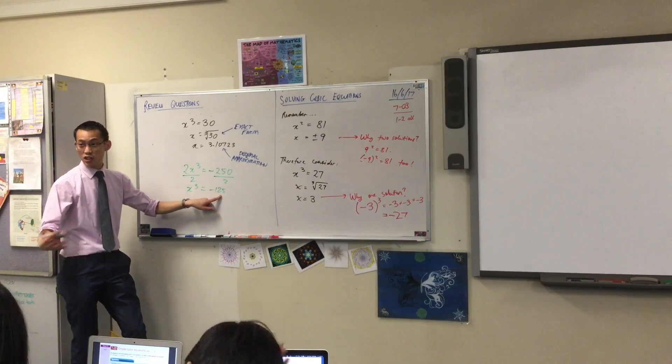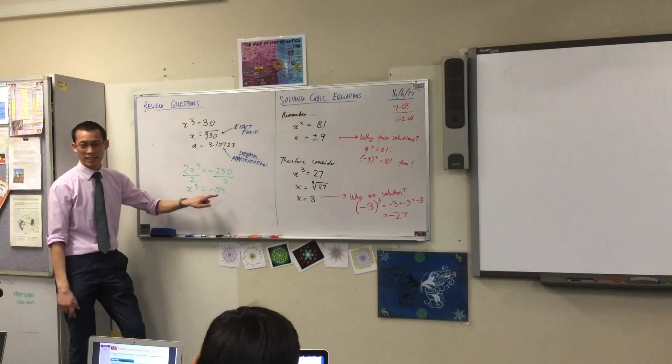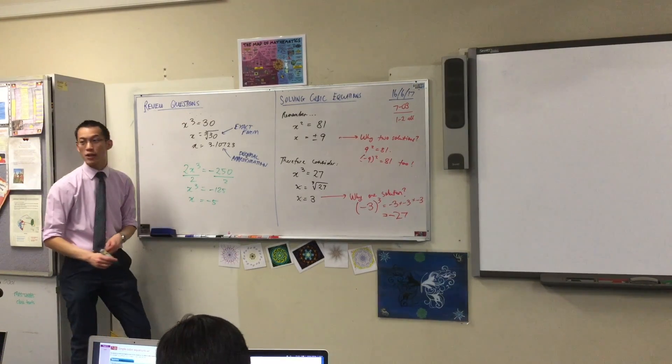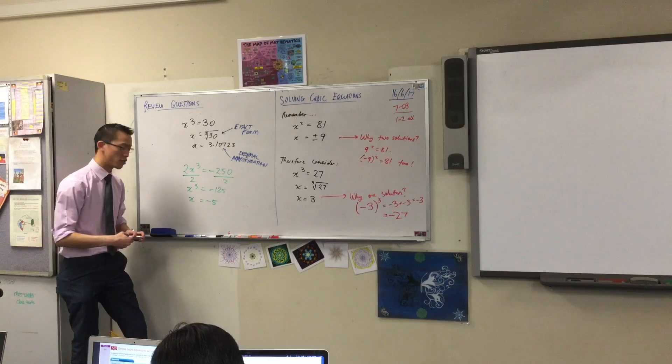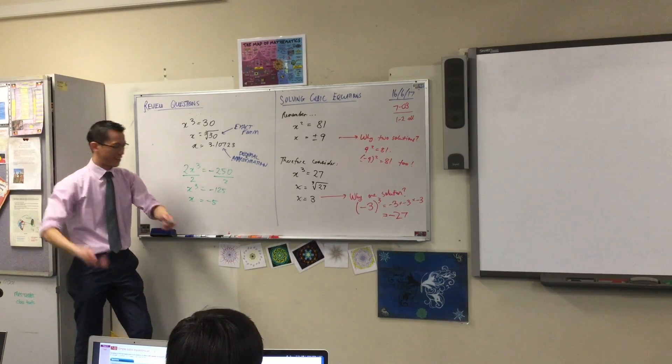This is also a nice neat cubic number, but note it's negative. So if you cube something to get to negative, well then it must have been negative to begin with. And your calculator will also tell you that. The cube root of negative 125, it will directly handle your negative 5.